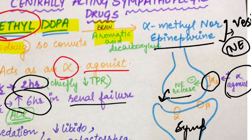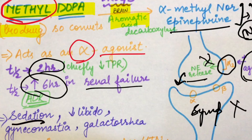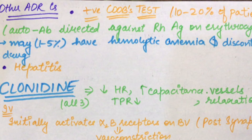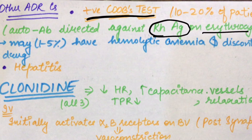We inhibit norepinephrine release so that sympathetic action does not occur. This is methyl dopa's mechanism of action. Its adverse drug reactions include sedation, decreased libido, gynecomastia, and galactorrhea. It is safe in pregnancy for hypertension. About 10 to 20% of patients given methyl dopa will have a positive Coombs test — meaning auto-antibodies are formed against RH antigen on RBCs.